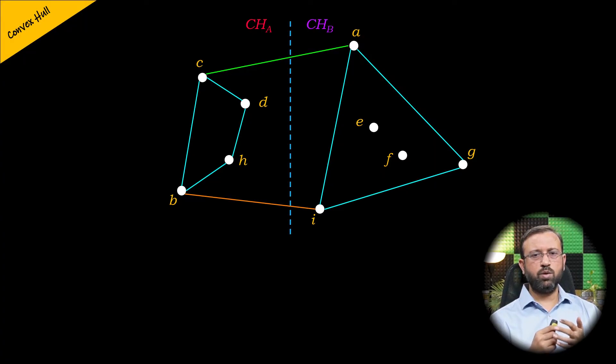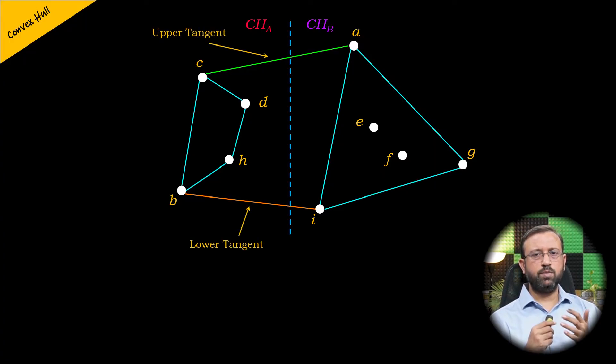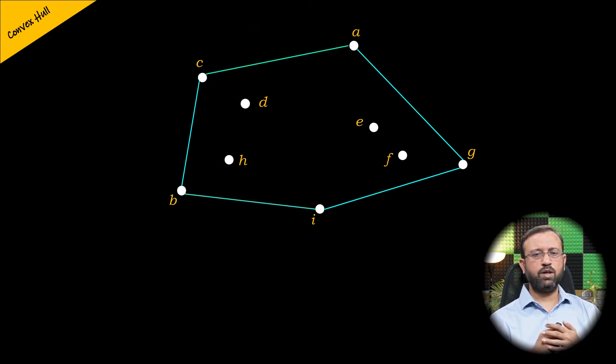Once the lower and the upper tangent are computed, the merging is completed and we have the overall convex hull for the set of points.